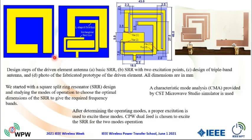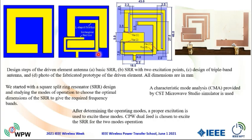After determining the modes, appropriate excitation is used to excite these modes. We use here a CPW feed, as shown in this L-shaped feed for exciting one mode. And this is a transmission feed for another mode, which comes from a slot inserted on the ground plane. This is the fabricated driving element for the triple-band antenna.